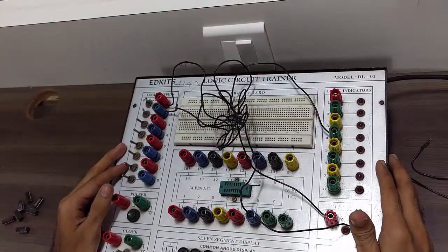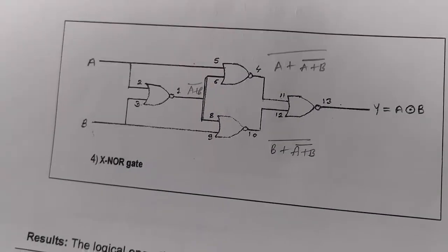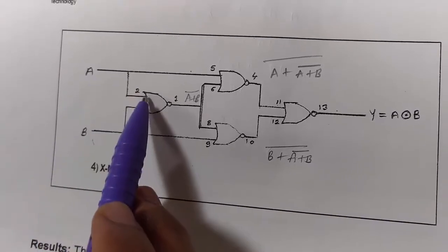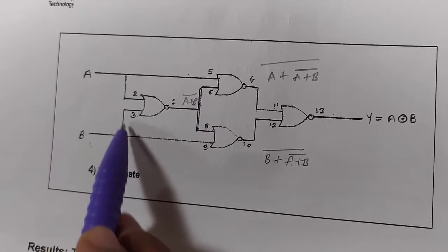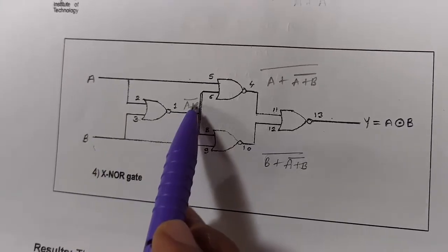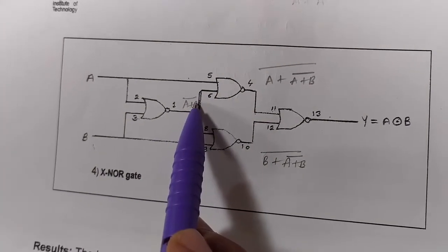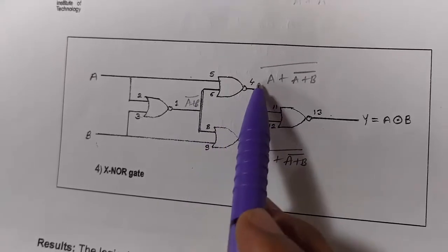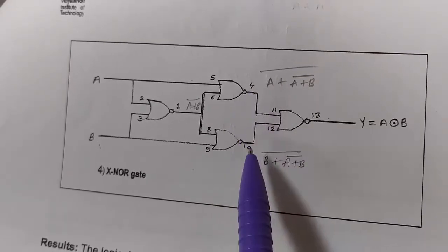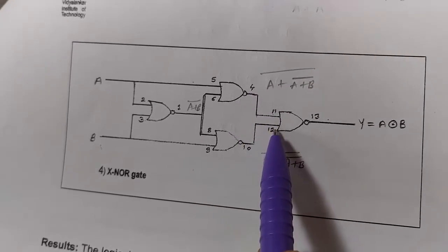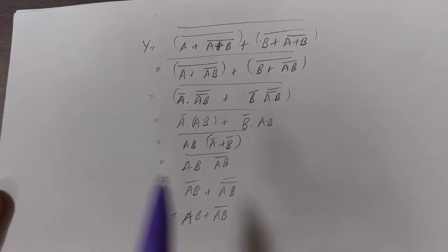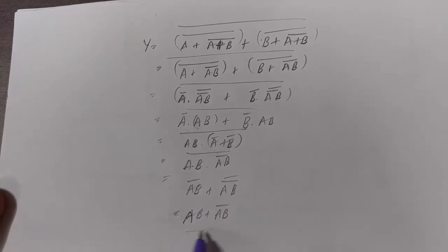Now let's assemble the circuit for XNOR gate using NOR gate. A input is given to pin 2 as well as pin 5. B input is given to pin 3 as well as pin 9. At the output of pin 1 we get A plus B bar. This A plus B bar goes as input to pins 6 and 8, giving output at pin 4. At pin 10 we get another output. Outputs of pins 4 and 10 are given as inputs to pins 11 and 12, and at pin 13 we get the final XNOR output.